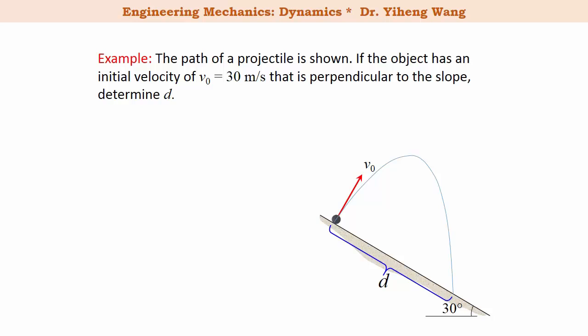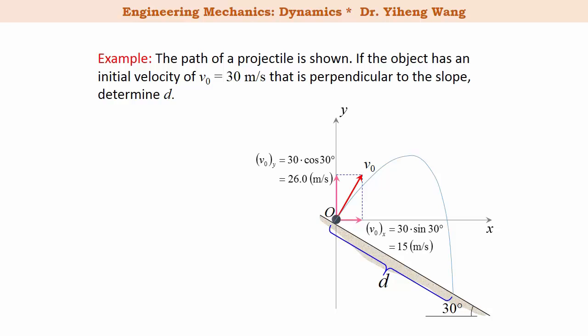Let's look at this example. The path of the motion of this projectile is shown. If it has an initial velocity of 30 meters per second and the direction is perpendicular to the slope, we are asked to determine the distance d. We first put this entire system into an x-y coordinate system, with the x-axis parallel to the horizon and the origin conveniently chosen to be the initial position of the object. Therefore its initial position is simply (0, 0), and then we resolve its initial velocity into x and y components using trigonometry.